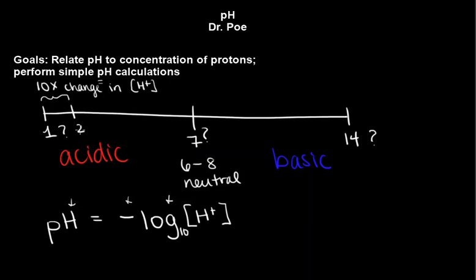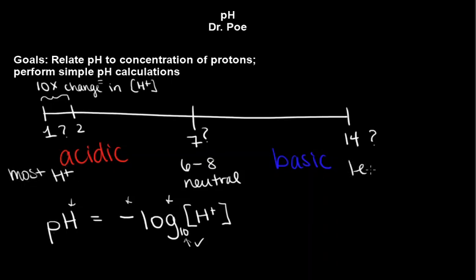Because this is log base 10, the difference between pH 1 and pH 2 is a tenfold change in the concentration of protons. pH 2 has 10 times as few protons as pH 1 — you've got to remember the negative. So this tenfold change applies for each one-unit change in number. Between 1 and 14, that is huge. The negative means that if you have more protons, it means a lower pH. So pH 1 has the most protons and pH 14 has the least.